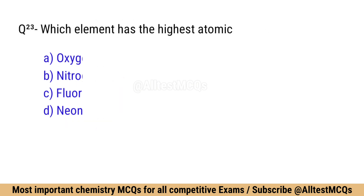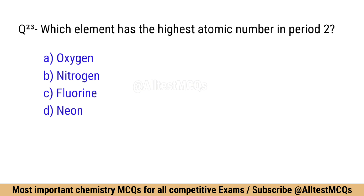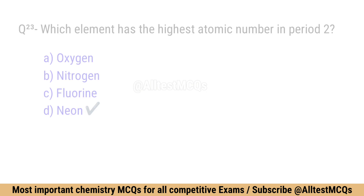Question number 23: Which element has the highest atomic number in period 2? Correct option is D: Neon.